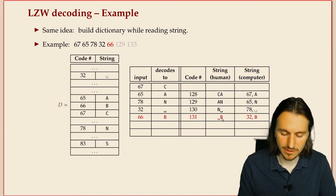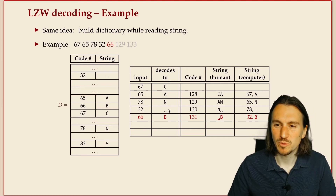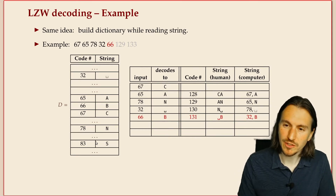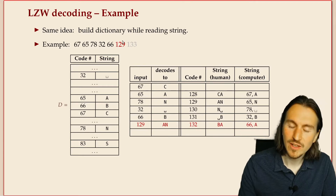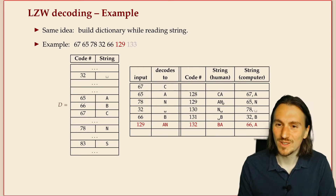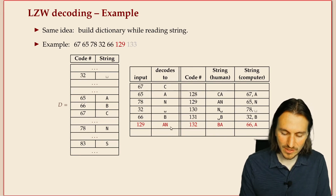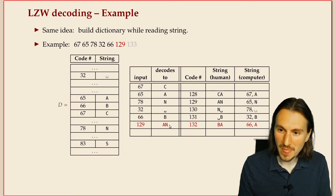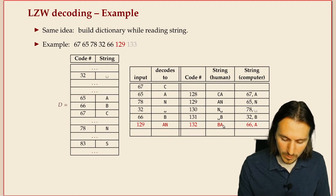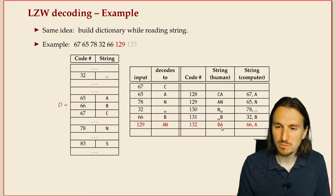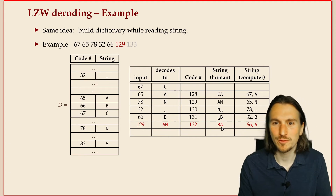Things become interesting when the next code word is above 128 — we use what we previously added to the dictionary. The text so far reads 'can ban'. The last phrase was 'b', the first character of the new phrase is 'a', so 'ba' was added to the dictionary at encoding time, and we have to do that now as well.